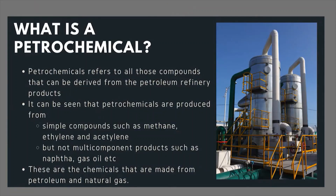What is a petrochemical? Petrochemical refers to all those compounds that can be derived from petroleum refining products. Petrochemicals are produced from simple compounds such as methane, ethylene and acetylene. Generally, petrochemicals do not refer to multi-component products such as naphtha, gas oil, gasoline, or diesel — those are mixtures of several hydrocarbons. Petrochemicals have a specific formula; they are single-component systems, which is where they differ from refinery products such as naphtha, gasoline, diesel, and asphalt.